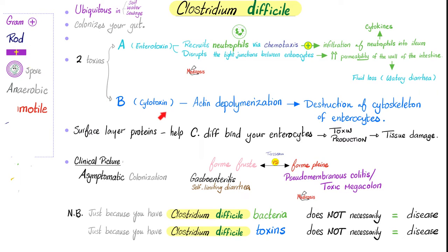Toxin B is cytotoxic — toxic to the cell. Specifically, it is toxic to the cytoskeleton of the enterocyte by causing actin depolymerization. Remember that actin is part of your cytoskeleton. Go back and review your basic histology.